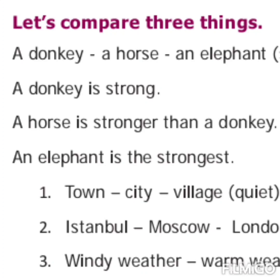Next exercise: compare three things — a donkey, a horse, and an elephant — using the adjective 'strong'. For positive degree, you can write any one: a horse is strong / an elephant is strong / a donkey is strong. For comparative degree, compare two: a horse is stronger than a donkey, or an elephant is stronger than a horse. For superlative degree, one sentence only: an elephant is the strongest of all — not a donkey, as that would be wrong.